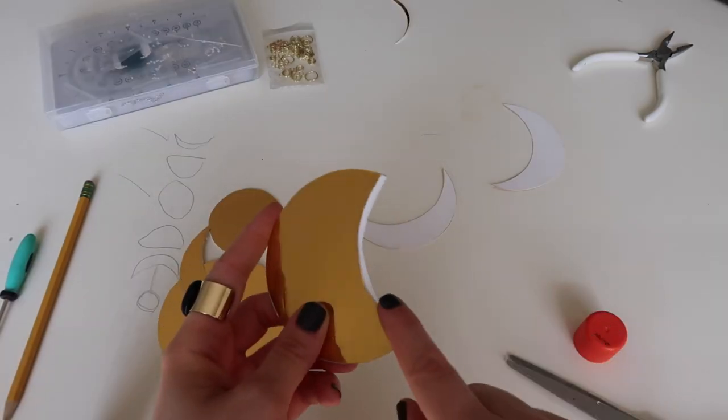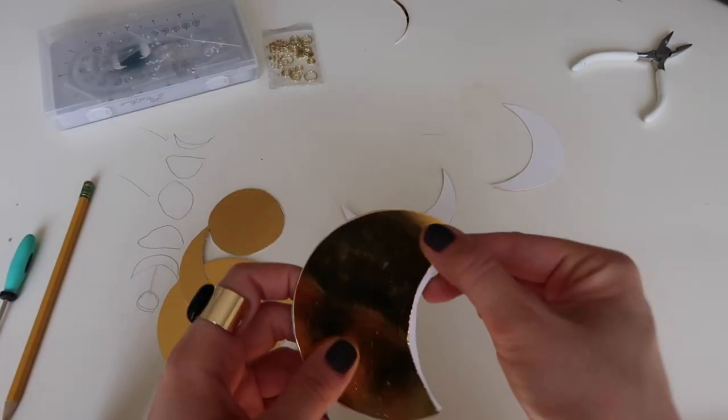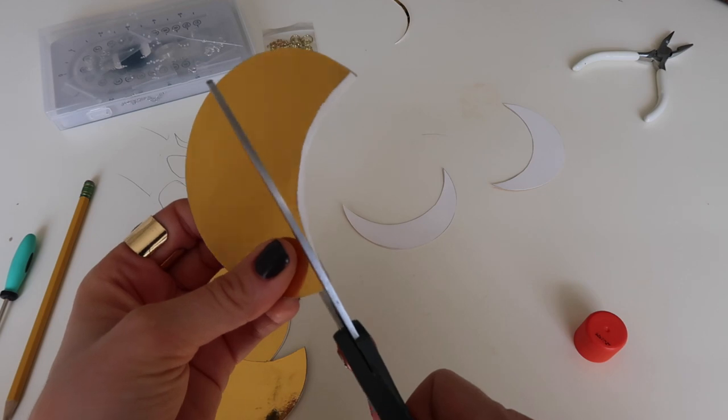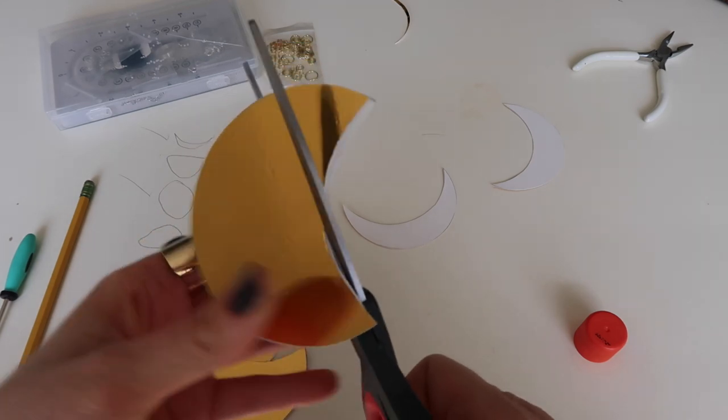After you glue your pieces together, if you have excess paper like I do here, just grab your scissors and cut it off, it's not a big deal.